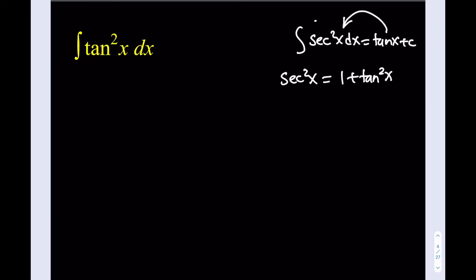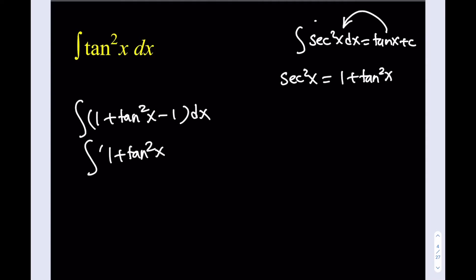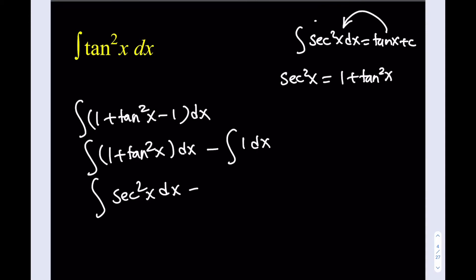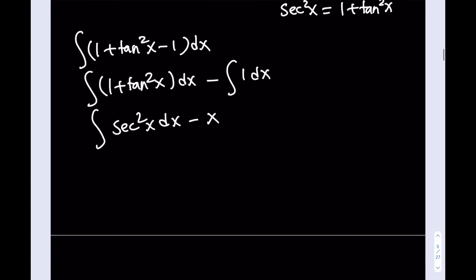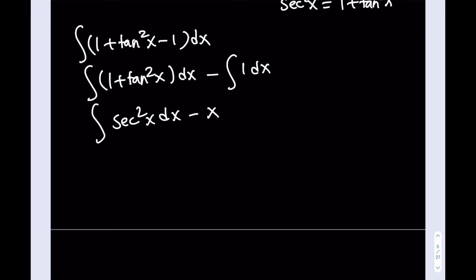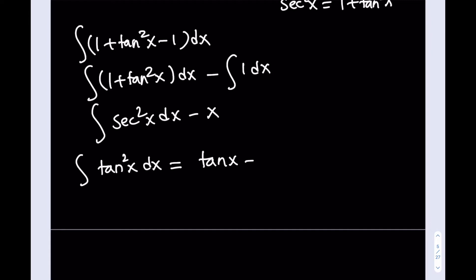This is really good because I can manipulate this equation and integrate from there. I'm going to add 1 and then subtract it, separating the terms. Since 1 plus tangent squared equals secant squared, this becomes the integral of secant squared x dx minus the integral of 1 dx. The integral of secant squared is tangent x, and 1 integrates to x.